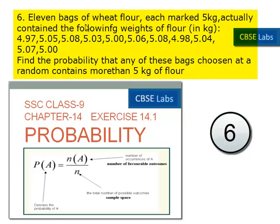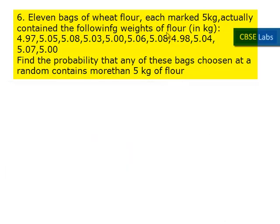Coming to the 6th problem. 11 bags of wheat flour, each marked 5 kilograms, actually contain the following weights of flour in kilograms: 4.97, 5.05, 5.08, 5.03, 5.00, 5.06, 5.08, 4.98, 5.04, 5.07, 5.00. Here we need to find the probability that any of these bags chosen at random contains more than 5 kilograms of flour.